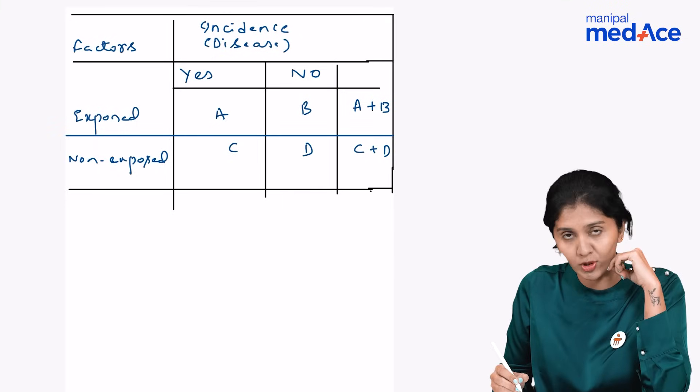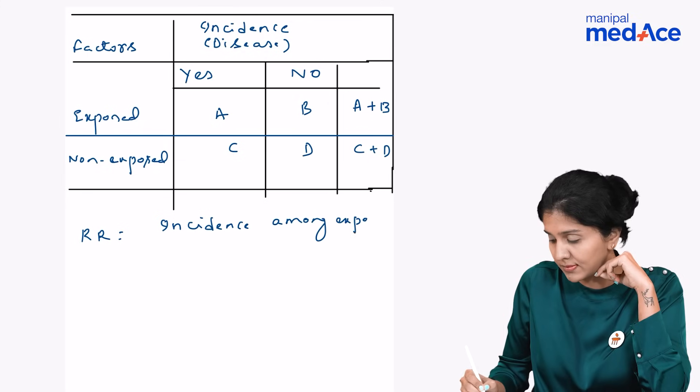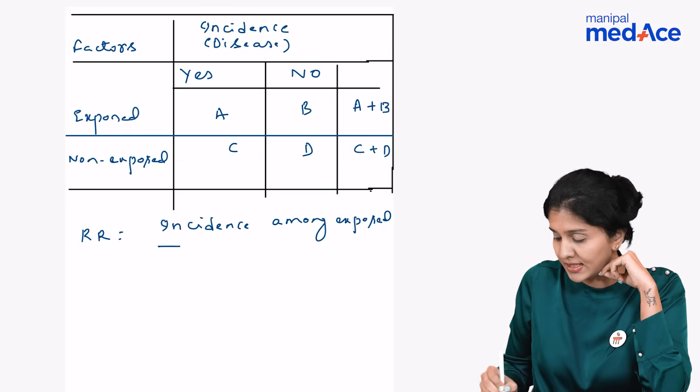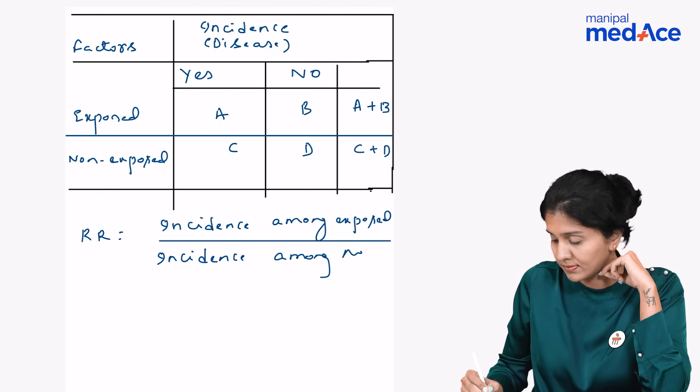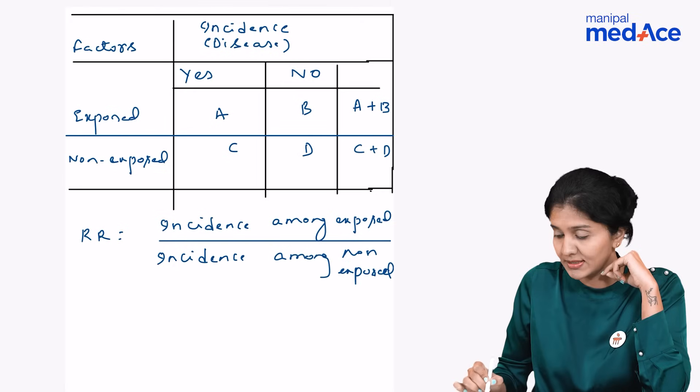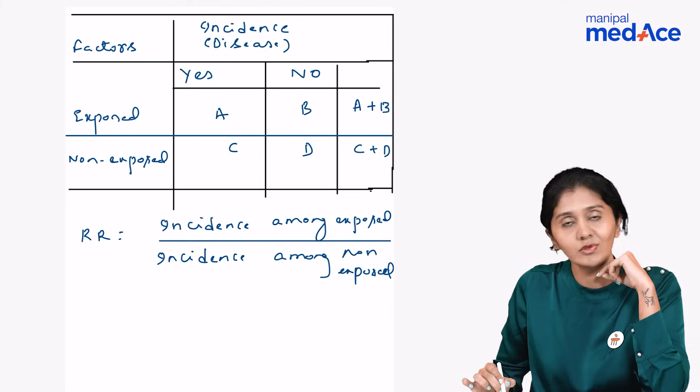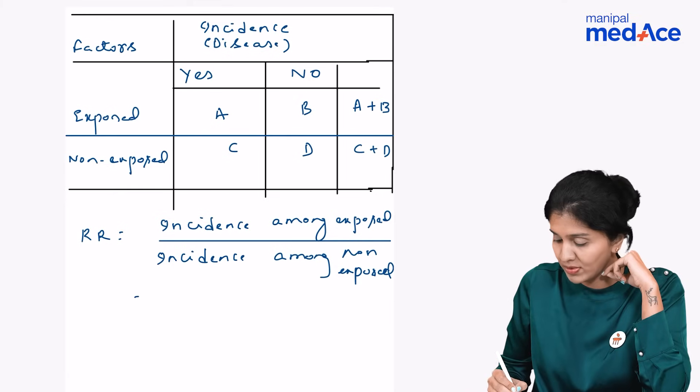So if this is the 2 by 2 table, what is the formula to calculate relative risk? We take incidence among exposed divided by incidence among non-exposed. Out of the exposed individuals, how many are developing the disease? So out of a plus b, that is the exposed individuals, a are the individuals who are developing the disease. So in the numerator, we put a divided by a plus b.